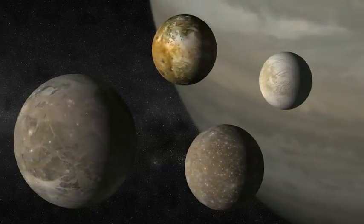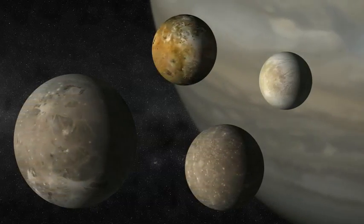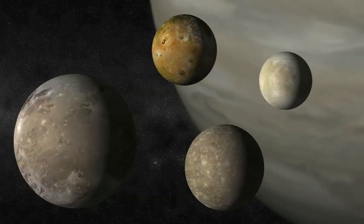Four of its many moons are so large that Galileo spotted them with his primitive telescope in 1610.